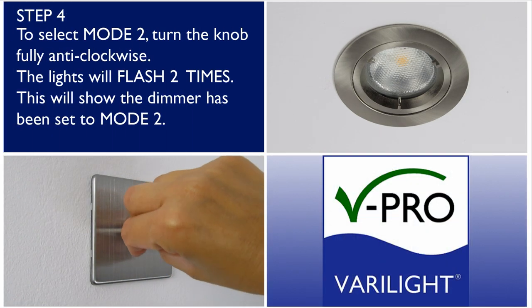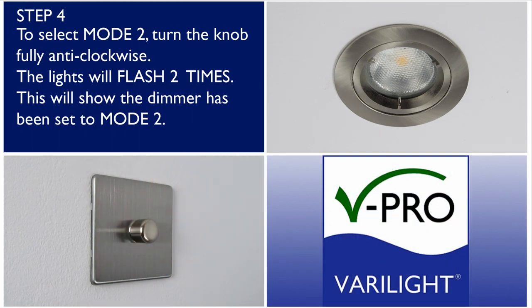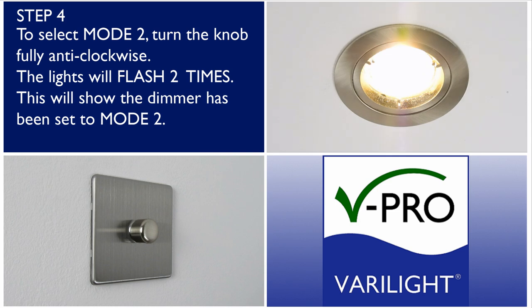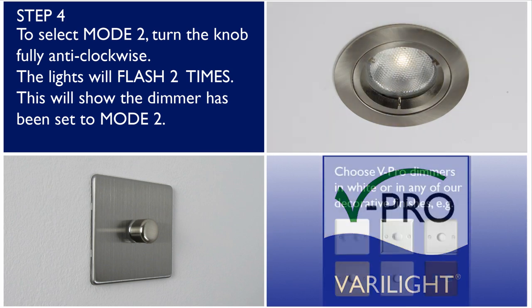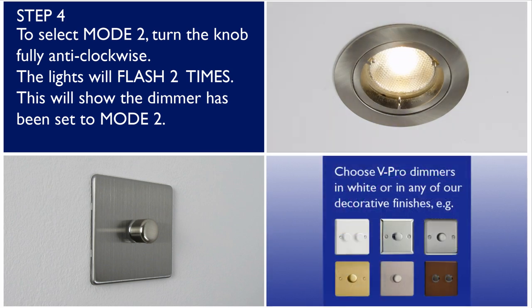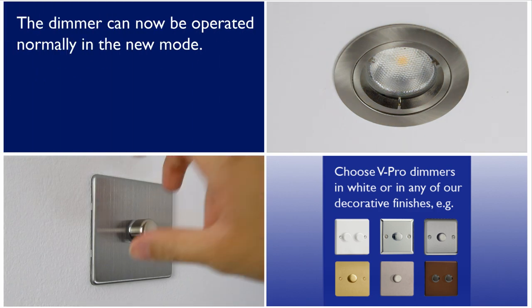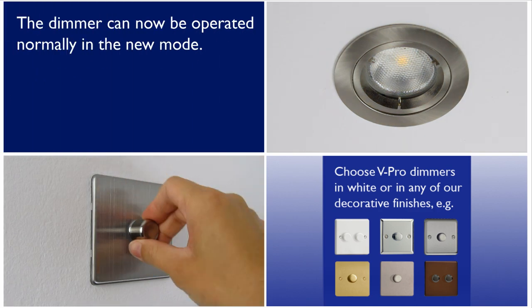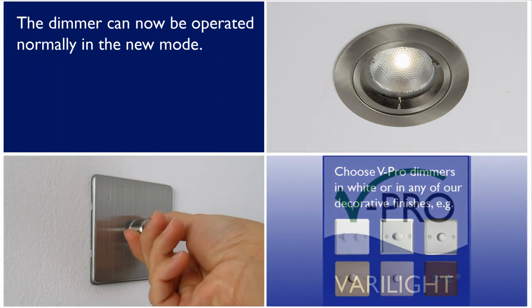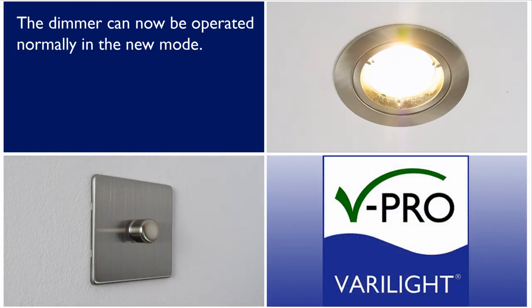To select mode 2, turn the knob fully anti-clockwise. The lights will flash twice. This will show the dimmer has been set to mode 2. The dimmer can now be operated normally in the new mode.